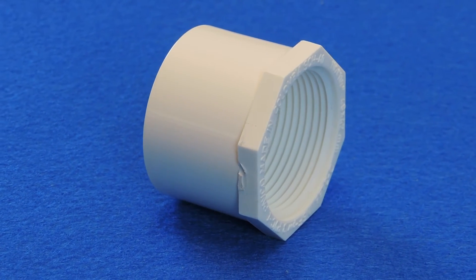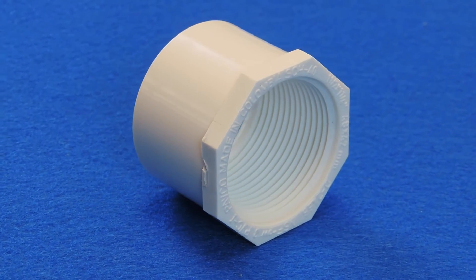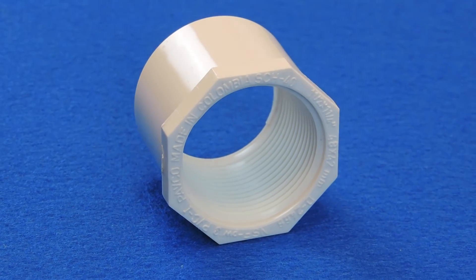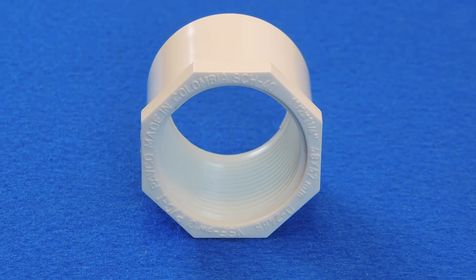For example, a 2 inch by 1 inch Schedule 40 SPIG by FIP reducer bushing works in this fashion. First, the 2 inch end of the fitting is cemented into the 2 inch slip fitting or opening.